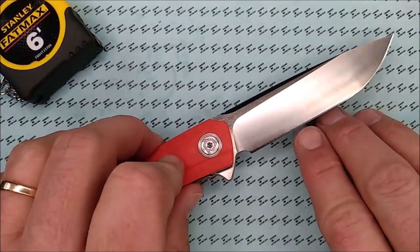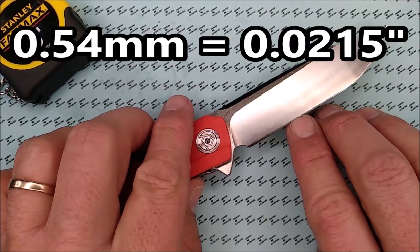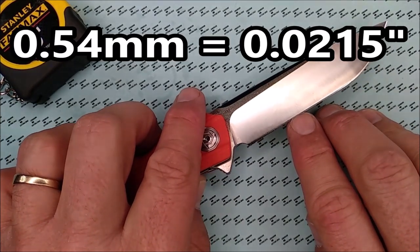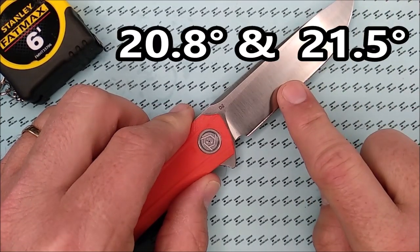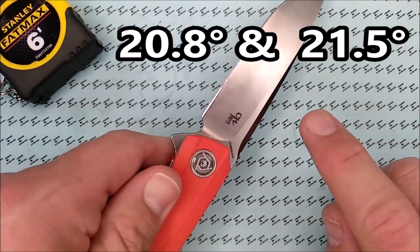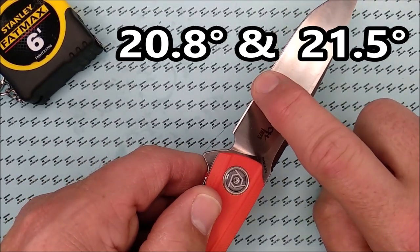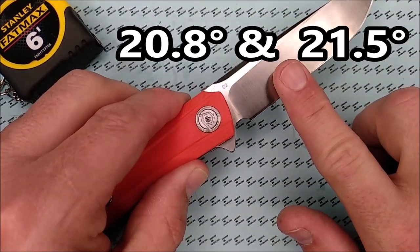The thickness of the edge behind the grind right there, very good, .54 millimeters, which is .0215 inches. The grind angle, very good as well. 20.8 on, whoops, on this side where it says CH, 20.8 and 21.5 on this side.